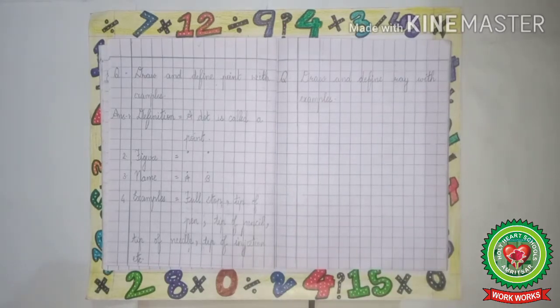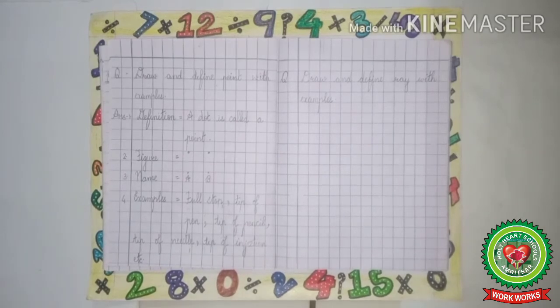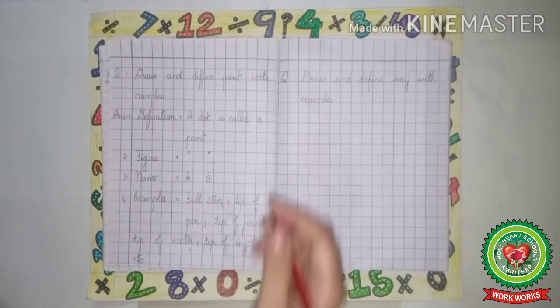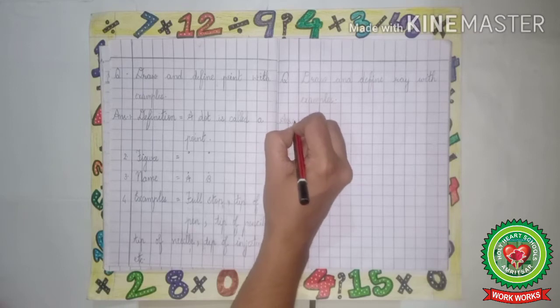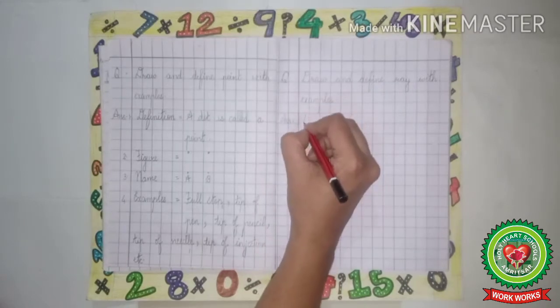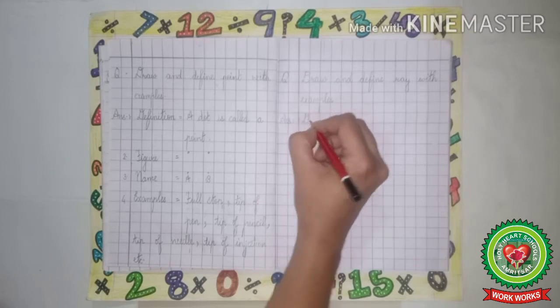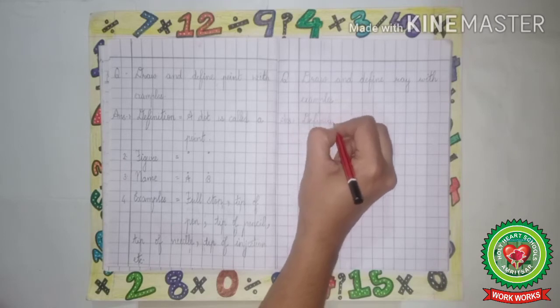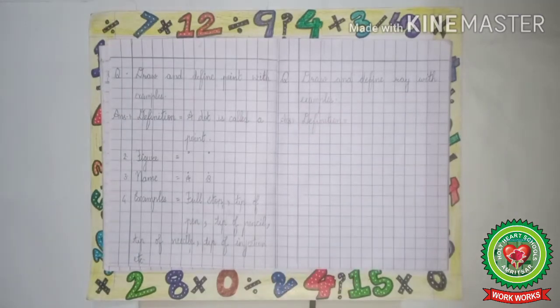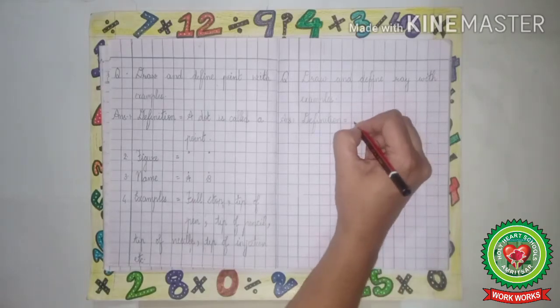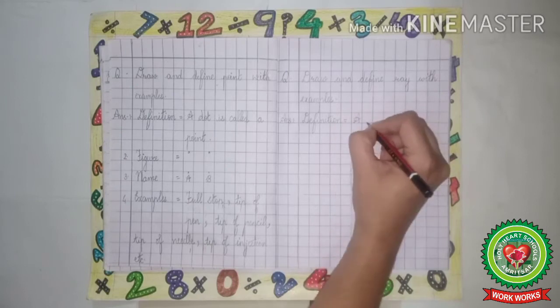Now first we will learn how to draw and define a ray with its example. So leave one line, answer. Answer one dot, definition. Definition.